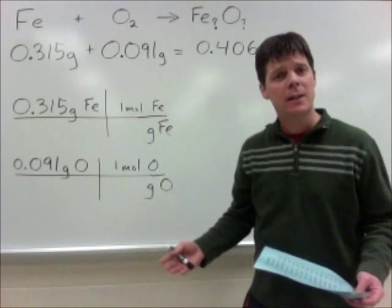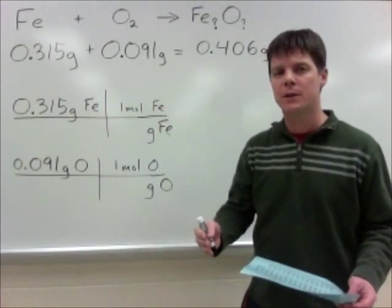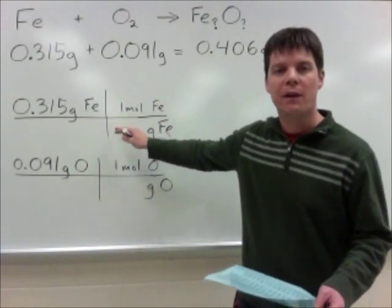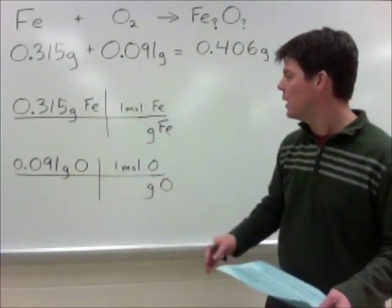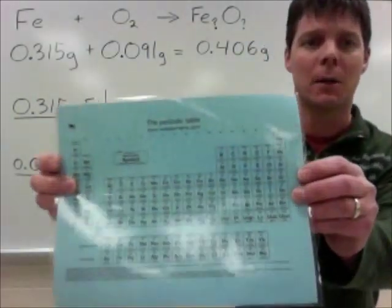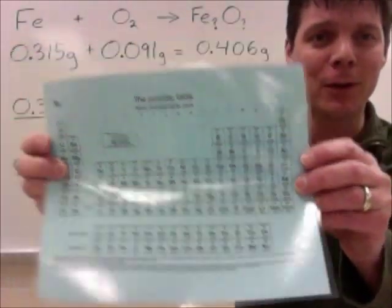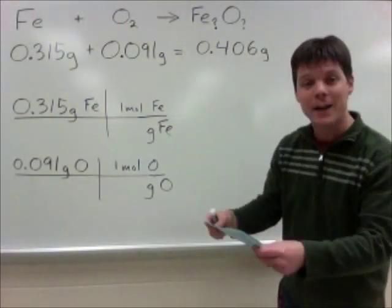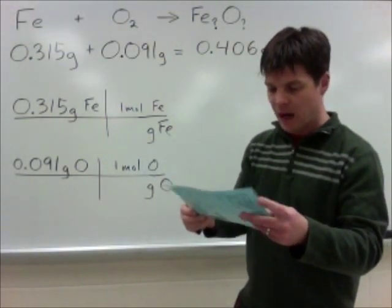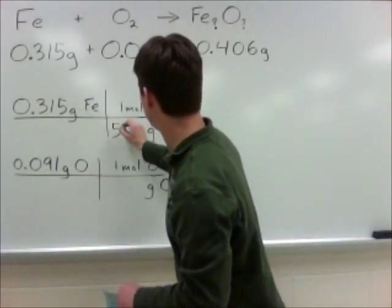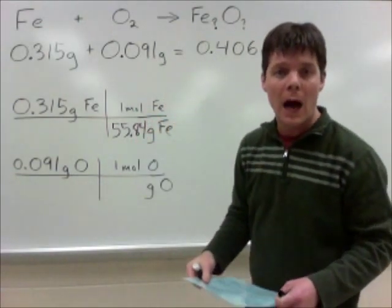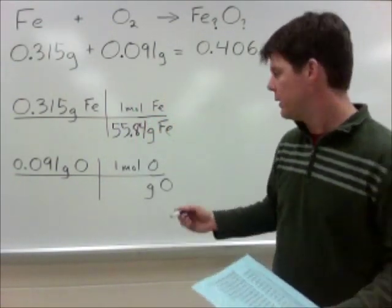My next step is to calculate the number of moles of each particular element present in this compound. So I want to calculate moles of iron and moles of oxygen. To do this, I'll need to know the molar masses of each element. I'm going to look it up on the periodic table. When I find iron on the periodic table, I see that its molar mass is 55.84, and the value for oxygen is 16.00.